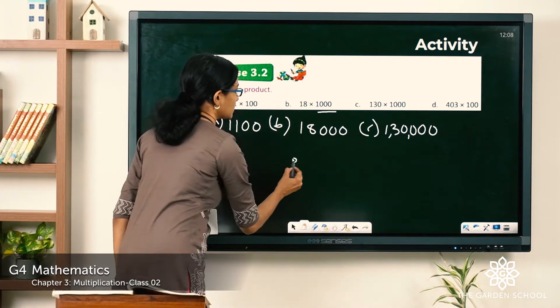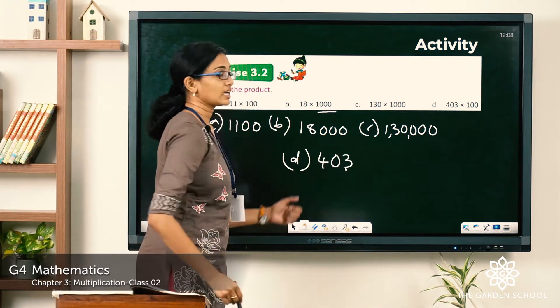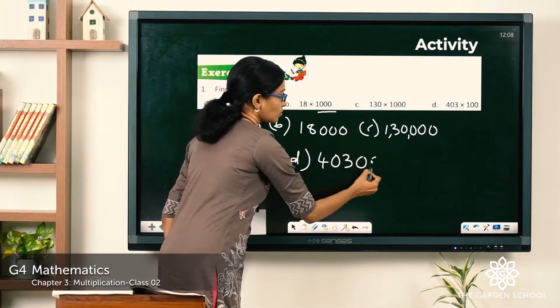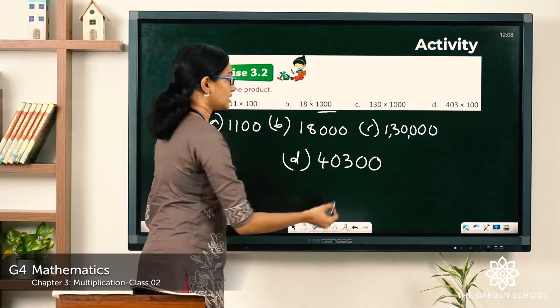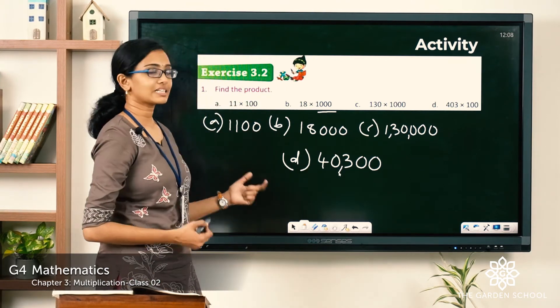Now question D. What is the given number there? It is 403 into 100. How many zeros? Two zeros. Now let's insert commas. So what is the product? It is 40,300.